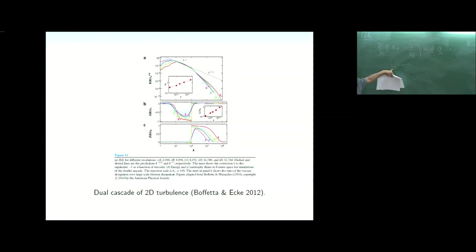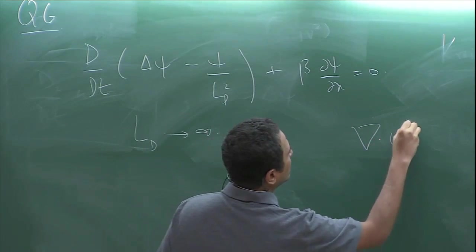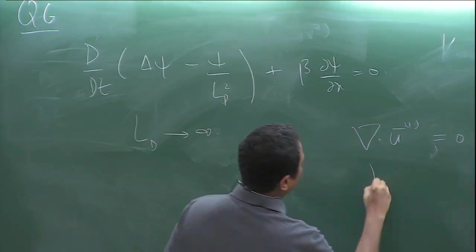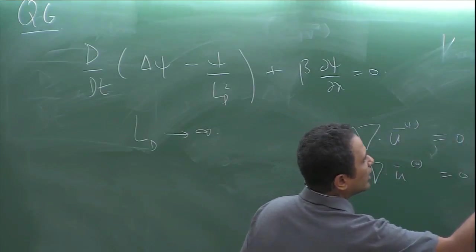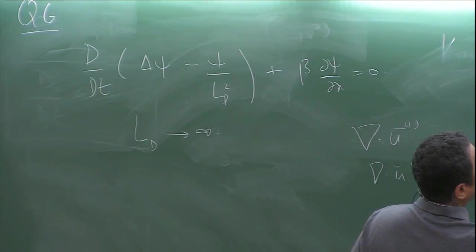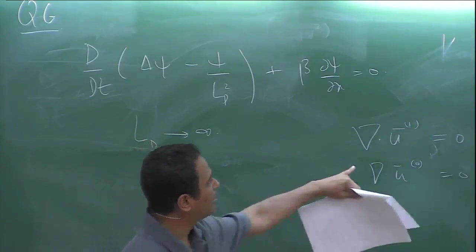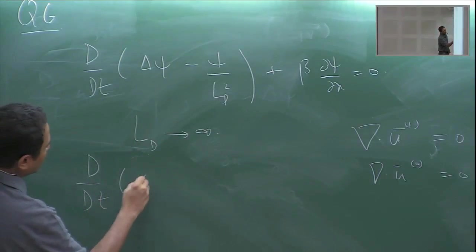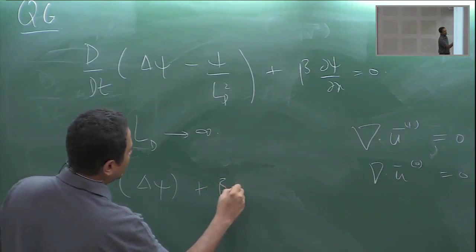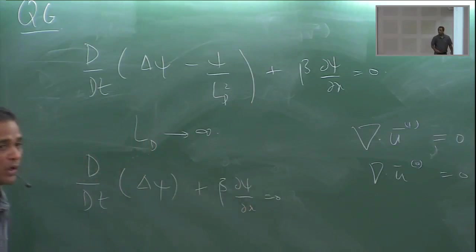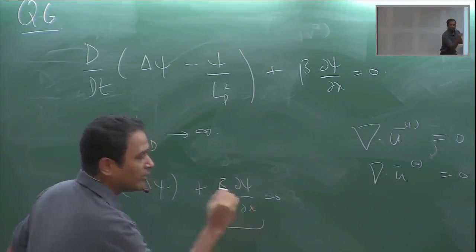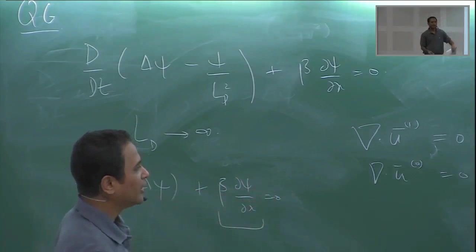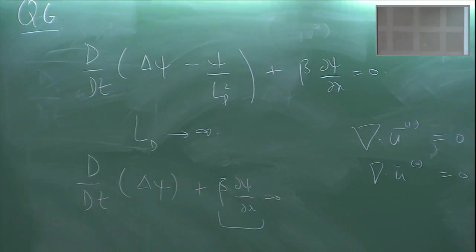Setting L_D to infinity, the equation simplifies to: D/Dt [Laplacian(psi)] + beta * partial(psi)/partial(x) = 0. Comparing this with the pure 2D equation, everything is the same except for this extra beta term. So can this extra term change the character of the 2D dynamics?